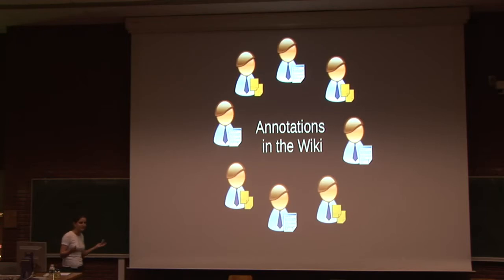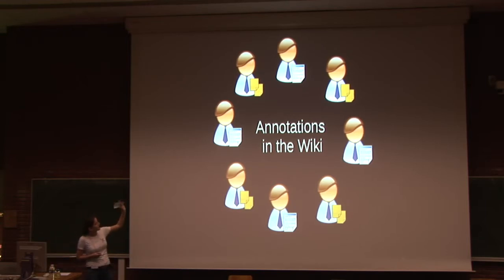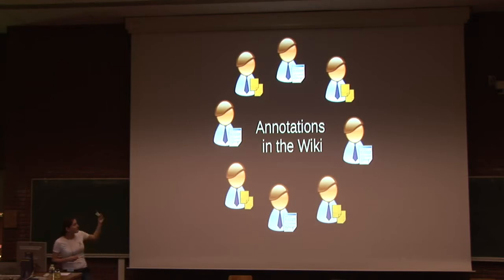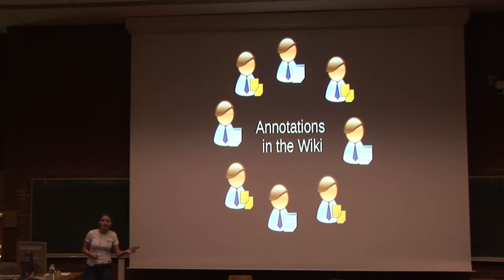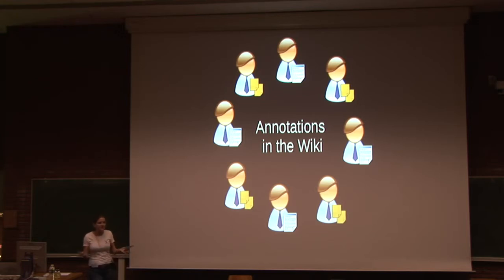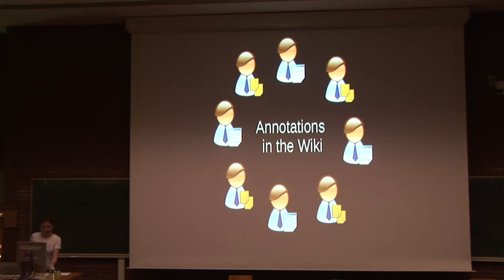Obviously the solution is to do this in a wiki. You have authors that collaborate in the wiki to create the paper, you have the reviewers that also do the annotations on top of that paper in that wiki, and everything is integrated in the same system, so you can always see the latest version, latest modifications, latest reviews, and so on. Let's see how that actually happens in XWiki.